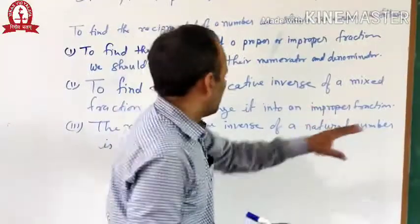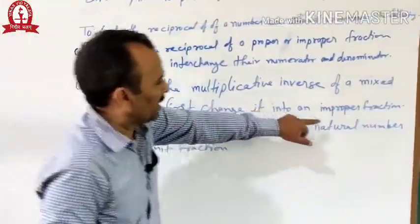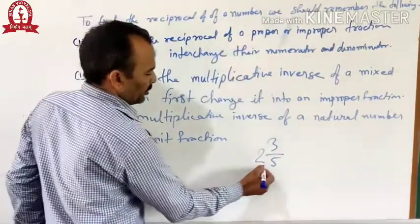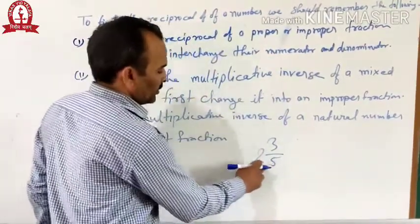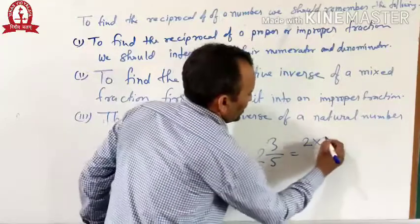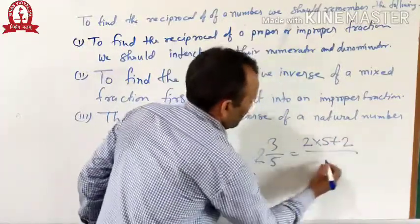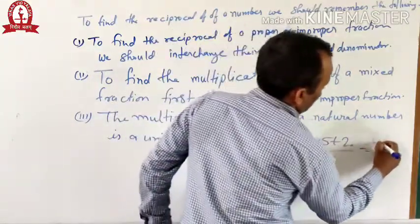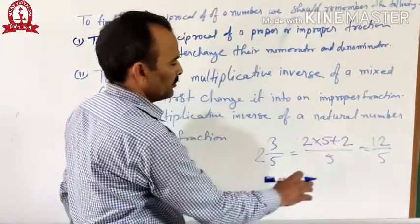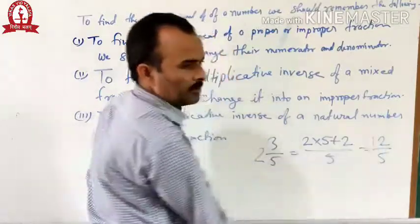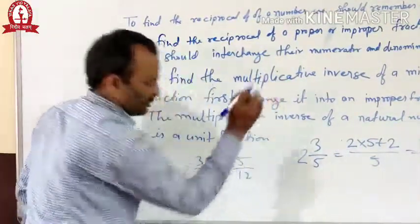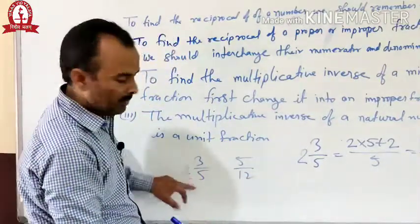To find the multiplicative inverse of a mixed fraction, first change it into an improper fraction. If you have a mixed fraction 2 whole 3 by 5, where 2 is the whole number and 3 by 5 is the fractional part, first change it into an improper fraction. That means 2 multiplied by the denominator plus numerator, divided by the denominator, gives us 12 by 5. Then interchange the numerator and denominator. So the reciprocal of 2 whole 3 by 5 is 5 by 12.